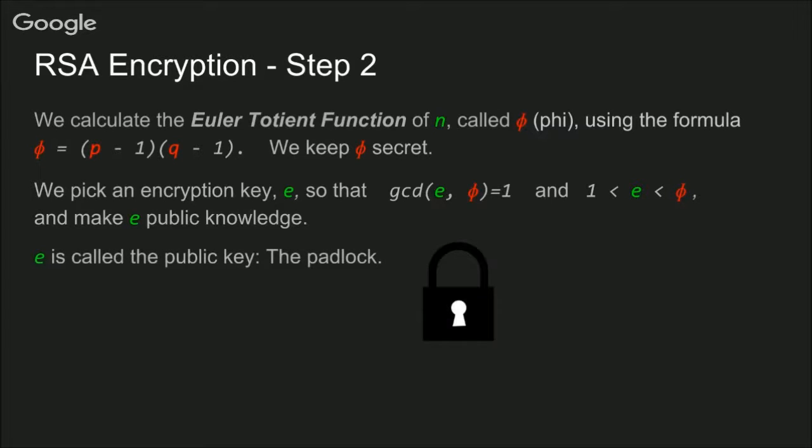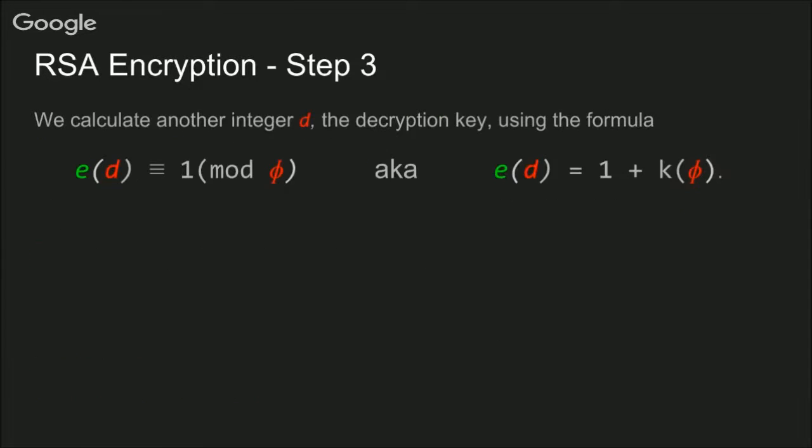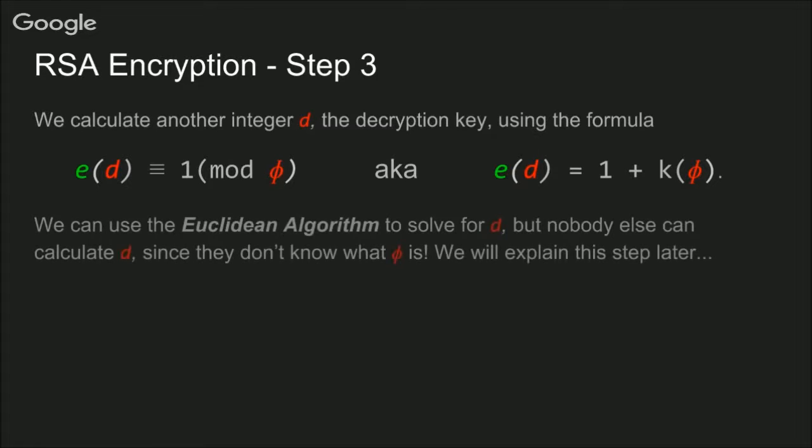E is called our public key. E is the padlock that people put on their information to lock it before they send it to us. We then calculate another integer, D, called the decryption key, using the formula E times D is congruent to 1 mod φ. We can also write this as E times D is 1 more than some multiple of φ. We can find D using the Euclidean algorithm, but nobody else will be able to find D since they don't know what φ is. And we'll explain what the Euclidean algorithm is later.